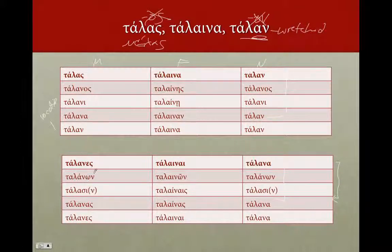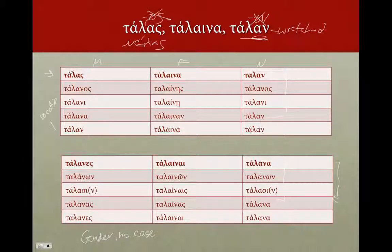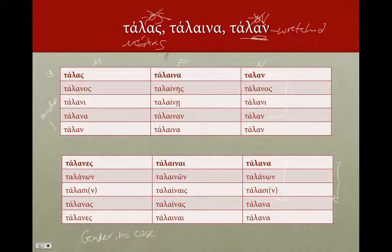Now with adjectives, remember: adjectives match the noun they're modifying in gender, number, and case. So we could have 'a wretched man': ho talas anthropos. The endings don't match between a second declension and a third declension noun. The feminine talana could modify a first declension noun like 'wretched justice' — hey talana dike — or a second declension feminine like hey talana hodos, or even a third declension noun. The endings don't match, but the gender, number, and case do. That's probably the most important thing you can remember about all adjectives: they don't match in ending — they match in gender, number, and case.